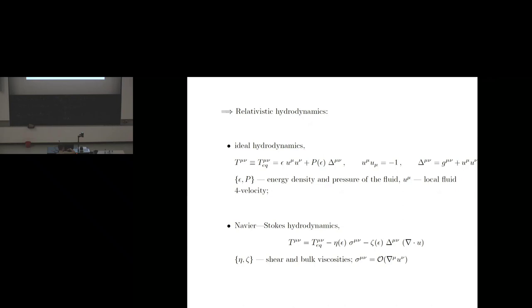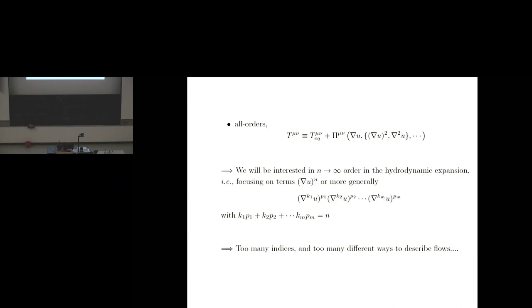In the relativistic context, we can do the decomposition into various structures. One of them is the shear tensor, the other is the bulk tensor. Here we have two transport coefficients: the shear viscosity and the bulk viscosity. Having the AdS-CFT correspondence tells us that we don't have to stop here. In fact, there is an infinite set of derivative corrections, and that's our effective field theory.